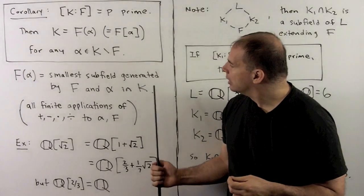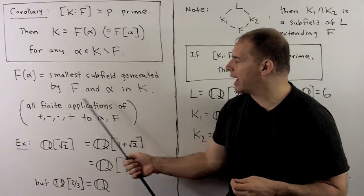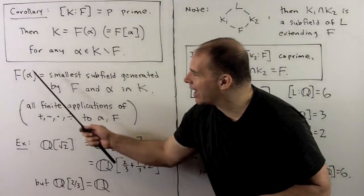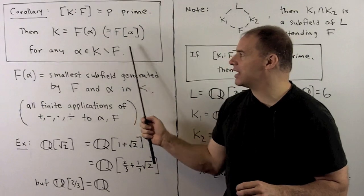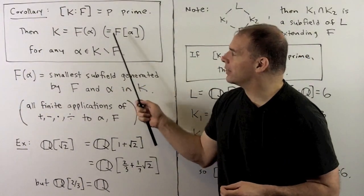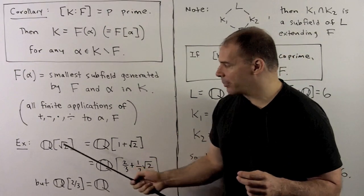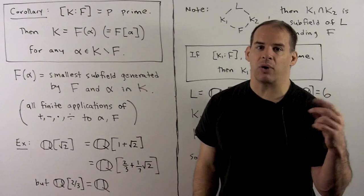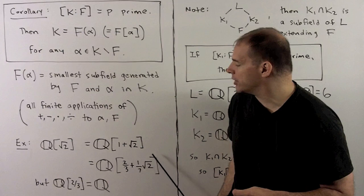Another corollary: suppose K extends F and α is any element of K. We consider the smallest subfield generated by F and α inside K — denoted F(α) — formed by all finite applications of addition, subtraction, multiplication, and division using only α and elements of F. Corollary: if the degree [K:F] is a prime P and we choose any α in K not in F, then the subfield generated by F and α equals K. As an example, for Q(√2): replacing √2 with any other element of Q(√2) that's not rational — say 1+√2 or 2/3 + (1/7)√2 — gives the same field back.